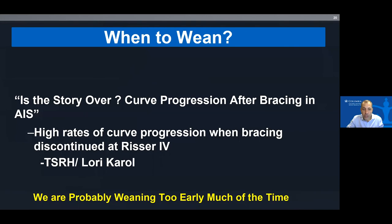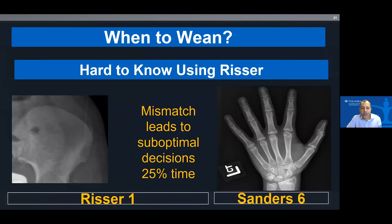Regarding when to wean, there's a lot of variability. Laurie Carroll at TSRH showed we're probably weaning too early, especially in larger curves — weaning at Risser 4 will likely result in more people progressing and needing surgery. If you're using Risser score, you're probably not making the best decisions either. A study done at CHOP and our center, with Ben Roy as first author, showed that using iliac apophyseal closure leads to suboptimal decision-making about 25% of the time.